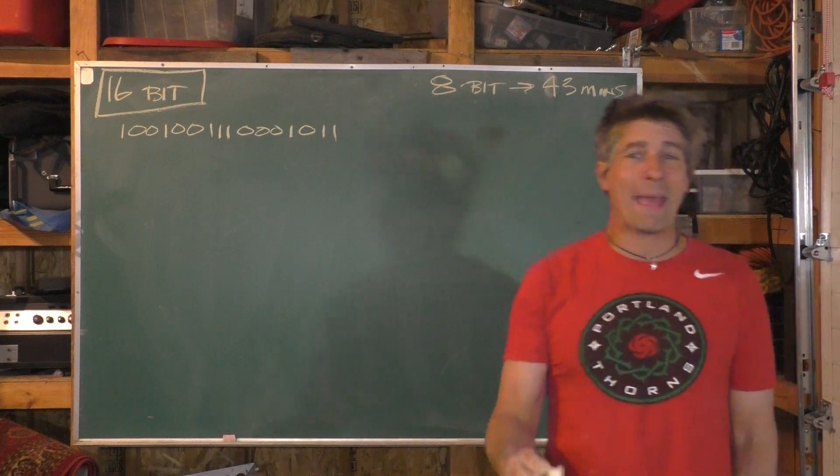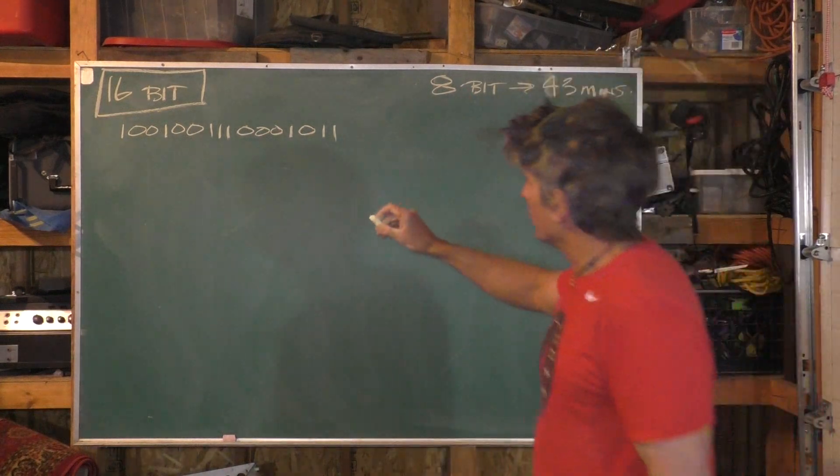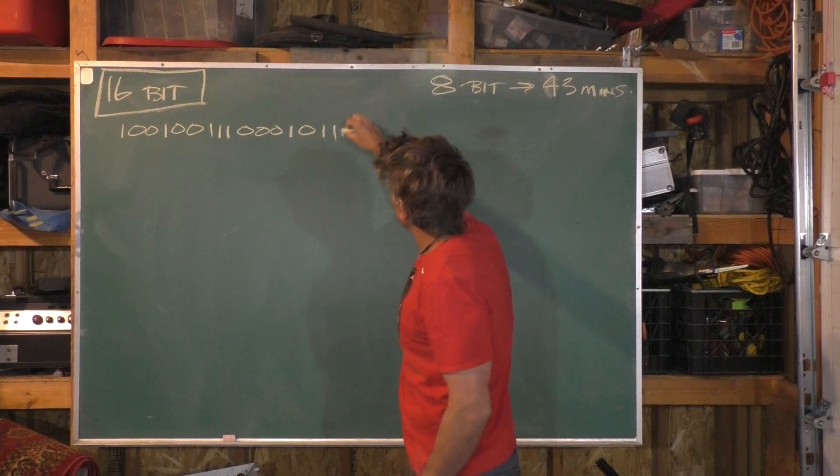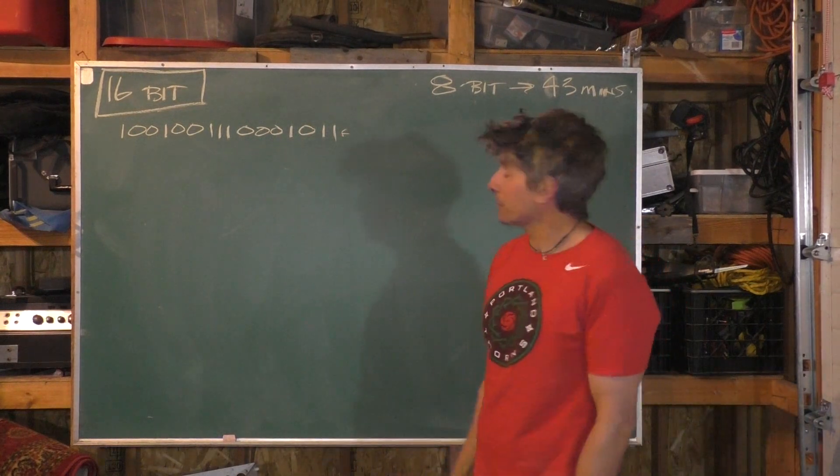I want to do the same kind of math on a 16-bit code. So here's an example of a 16-bit code, just 16 characters that are either ones or zeros.